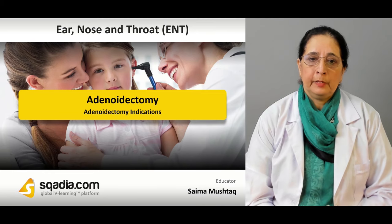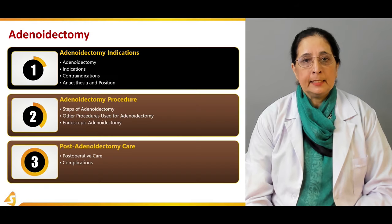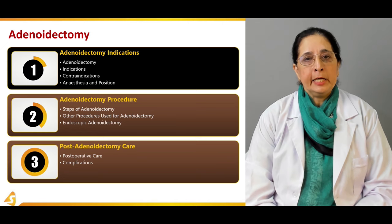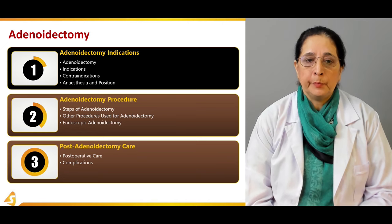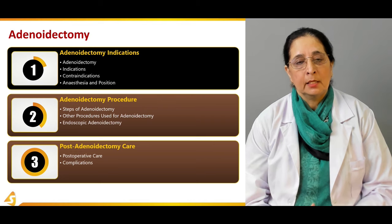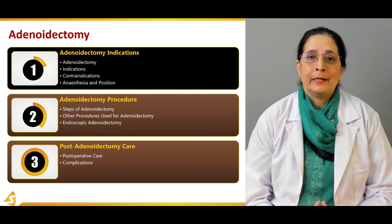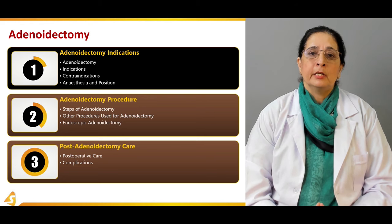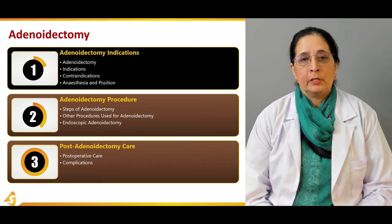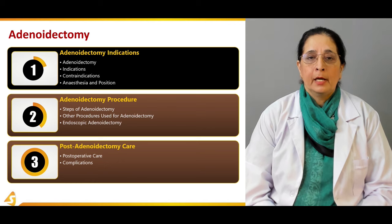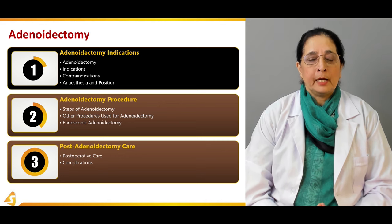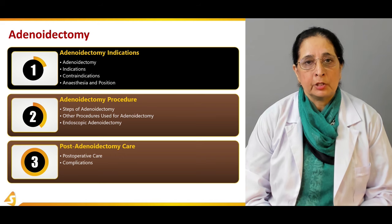Let's begin with the first section of our lecture on adenoidectomy. In this section we will discuss what adenoidectomy is, what the indications are for performing it, what some contraindications are — conditions in which we should not be performing adenoidectomy — and also what type of anesthesia is used and what position the patient should be in during the procedure.